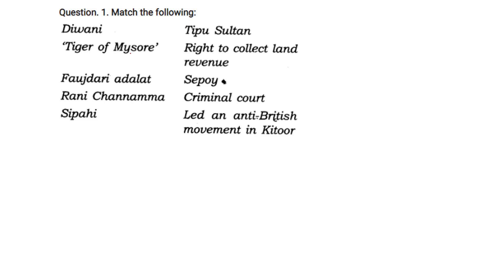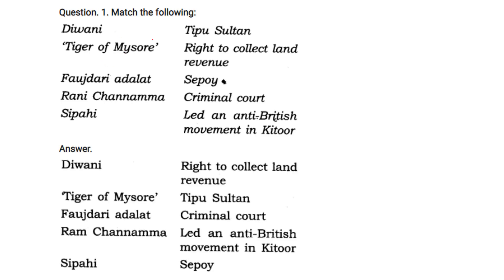Key terms: Diwani is the right to collect land revenue. The Tiger of Mysore is Tipu Sultan. The Faujdari Adalat is the criminal court. Rani Chanamma led an anti-British movement in Kittur. Sipahi comes from the word 'Sepoy.'